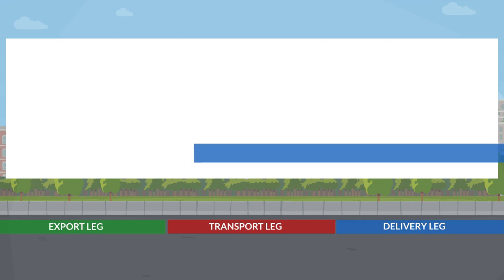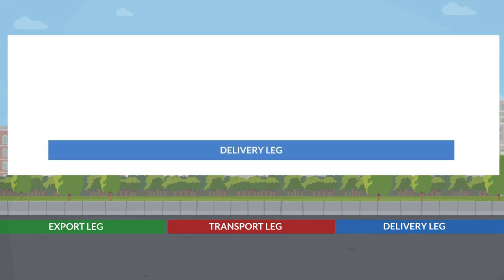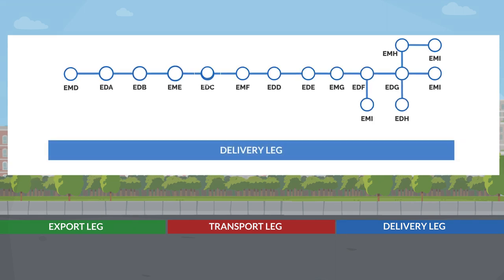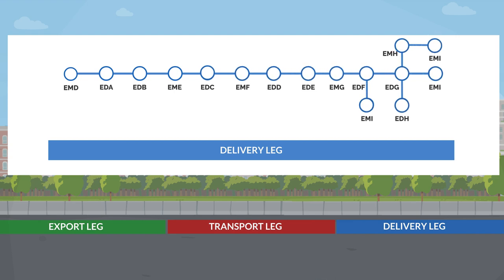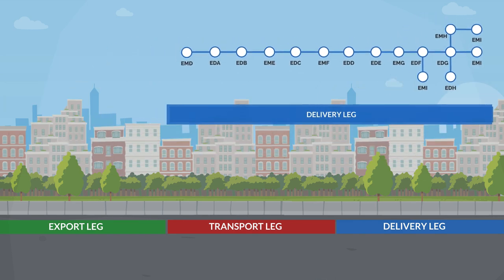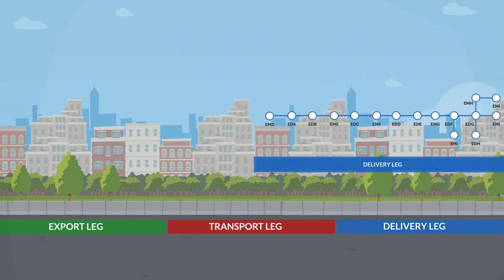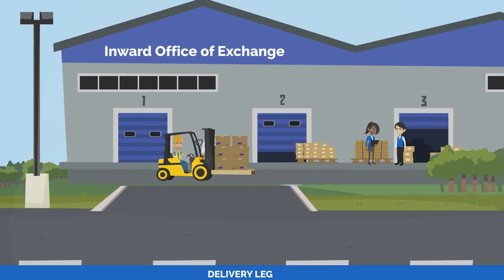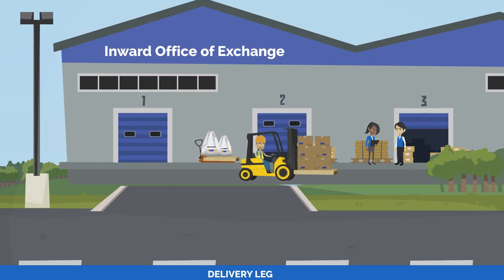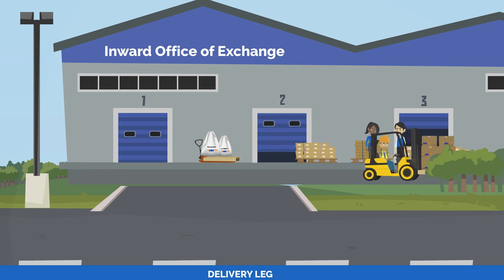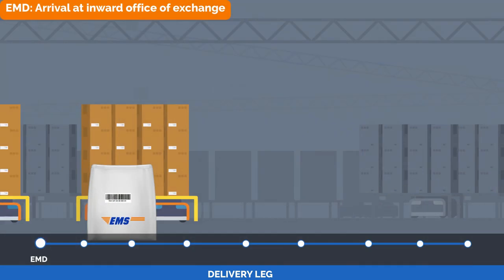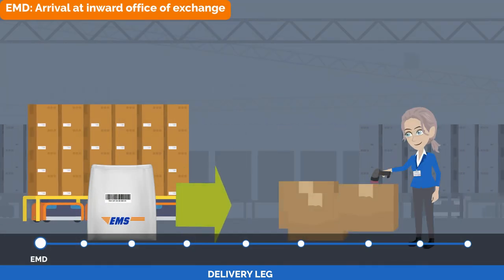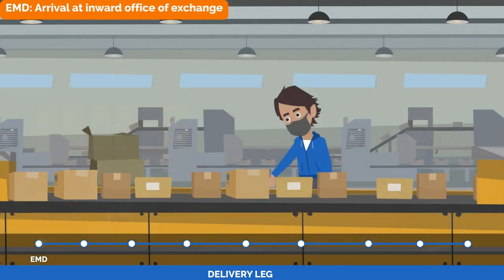The EMS items are now on the last stage of the EMS pipeline — the delivery leg. In the delivery leg, international items may need to go through the customs clearance process. After clearance, items are sorted by local destination and sent to the delivery office for express delivery. At the Inward Office of Exchange, EMS dispatches are opened and EMS items receive the scanning event EMD, which is the arrival at Inward Office of Exchange.